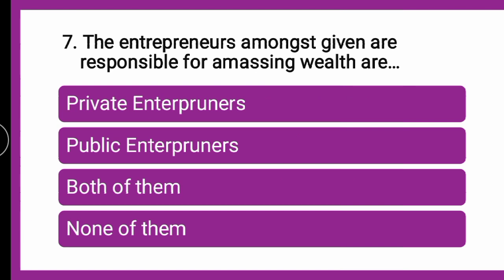Next question: The entrepreneurs amongst the given who are responsible for amassing wealth are — whether private entrepreneurs, public entrepreneurs, both of them, or none of them. The correct answer is private entrepreneurs. Private entrepreneurs are run by private investors, not by the government.